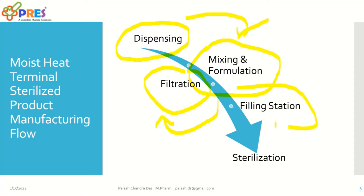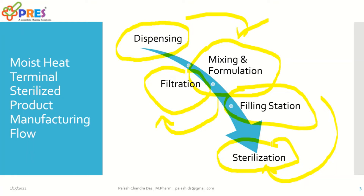After filtration, it will move to the filling stations. Based on containers and packaging configurations, this may be ampoules, flexible bags, or rigid containers — those will be filled in the appropriate filling station. Later it will go for sterilization — that's what we are calling terminal sterilization. So here we can understand what the fundamental major steps are to manufacture a terminally sterilized product.